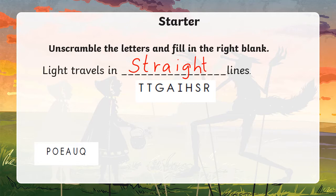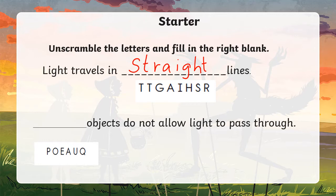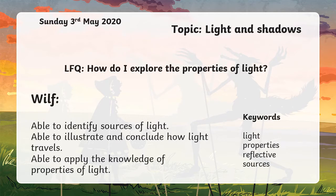Lights, right. Second one: dash objects do not allow light to pass through. Which object? Opaque objects. Well done, everyone. Today our learning focus question is: how do I explore the properties of light? You don't need to write the keywords. We have already written them before, so quickly write the LFQ and the date.